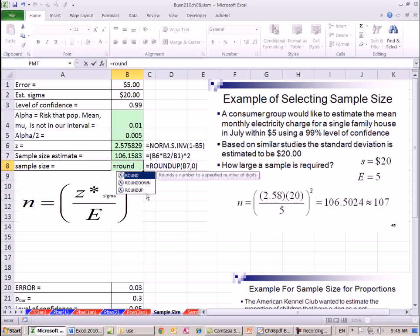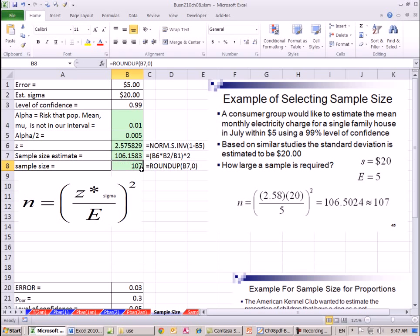Equals round. Notice there's round down, round up. We're going to use round up. It'll always go up. That's the number, comma, and you have to tell it to what position. We want it to the integer, so we put 0. Now we did this calculation in a separate cell. You certainly don't have to. You could do it all in one cell if you'd like. So there's our estimate for our sample size, 107. Let's look at our second example.